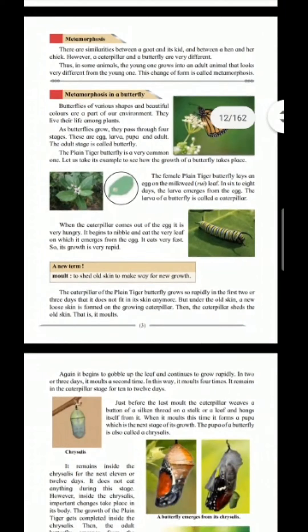The caterpillar of the plain tiger butterfly grows so rapidly in the first two or three days that it does not fit in its skin anymore. But under the old skin, a new loose skin is formed on the growing caterpillar. Thus the caterpillar sheds the old skin — that is, it molds. Molding is the term used to refer to the shedding of the old skin to make way for new growth.